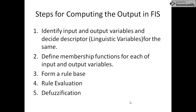First of all, we need to know the different steps for computing the output in a fuzzy inference system or fuzzy logic controller. There are five specific steps, which we have already discussed in the previous video. The first step is to identify the input and output variables and then decide the descriptors or linguistic variables for them. The input and output variables are already given in this case, and we have to decide the descriptors for those variables.